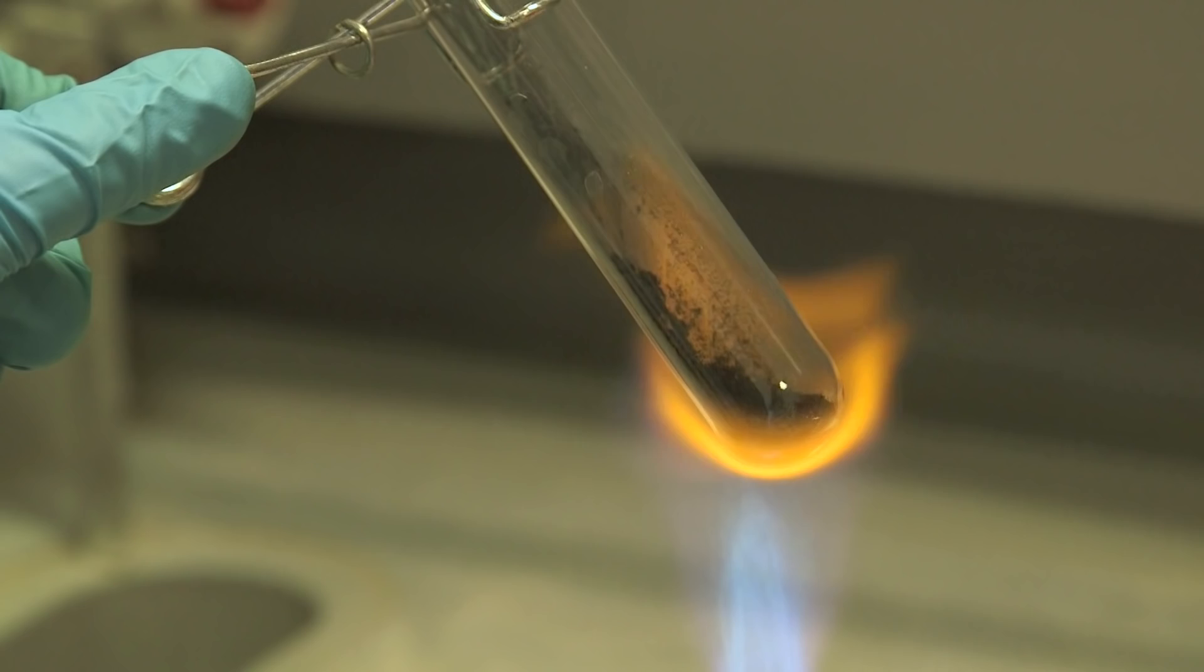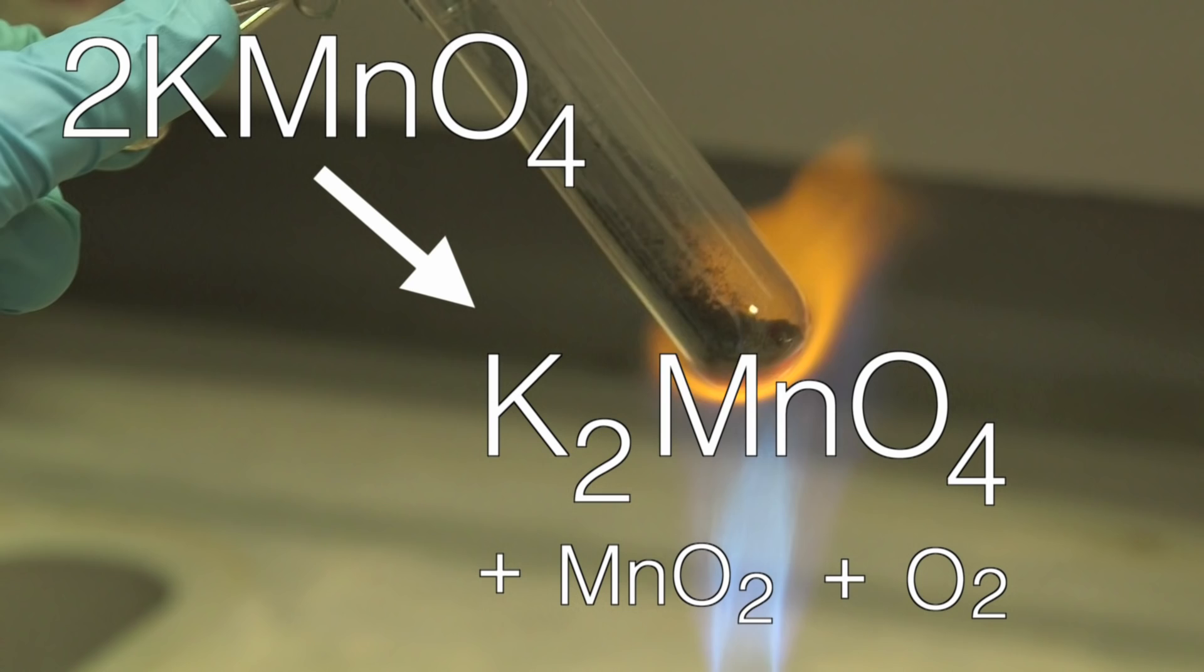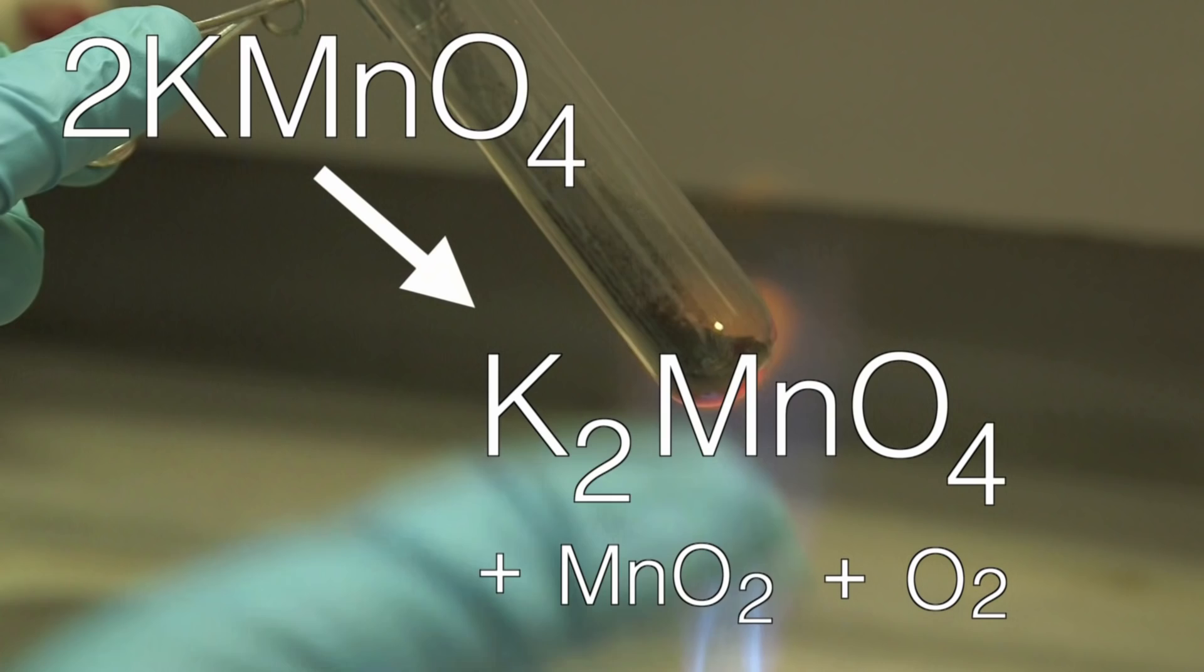You're also getting oxygen, which is why you saw that movement of the powder. As the gas is being liberated, it shot up the tube. And you're getting manganese dioxide there.